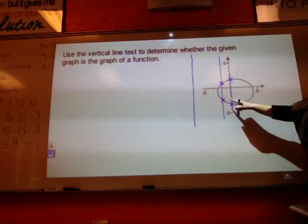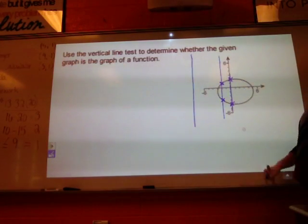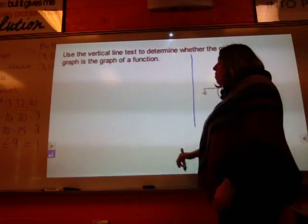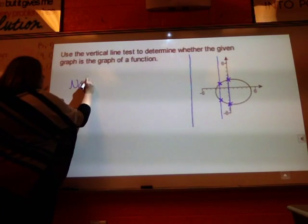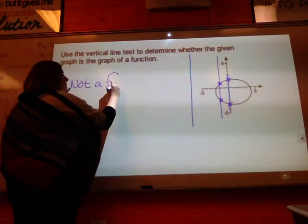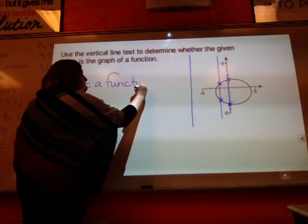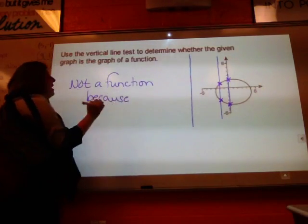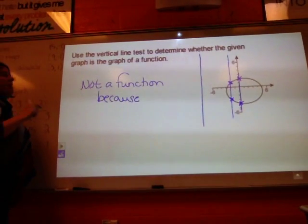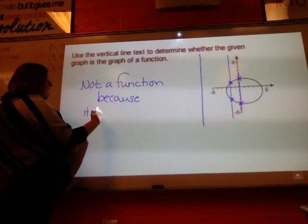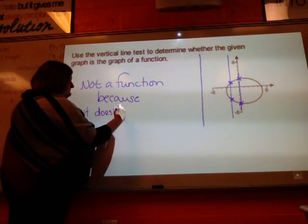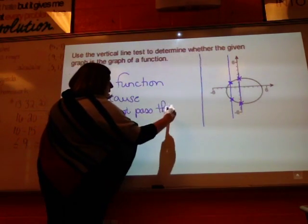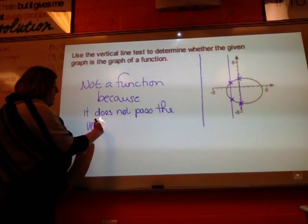So the fact that the vertical line crosses in more than one place makes this not a function. This particular graph is not a function because—it's important to know why—so not only is it not a function,